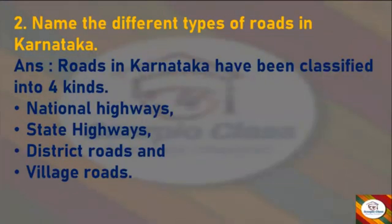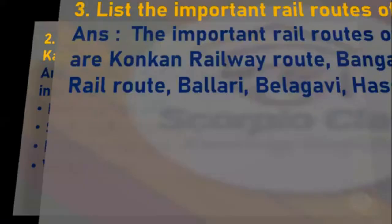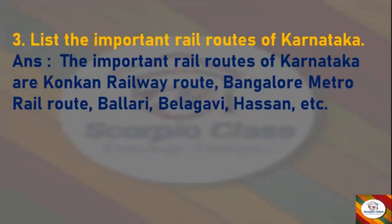Second question: Name the different types of roads in Karnataka. Answer: Roads in Karnataka have been classified into four kinds — National Highways, State Highways, District Roads and Village Roads. Next question: List the important rail routes of Karnataka. Answer: The important rail routes of Karnataka are Konkan Railway Route, Bangalore Metro Rail Route, Bellari, Pelegavi, Hassan, etc.